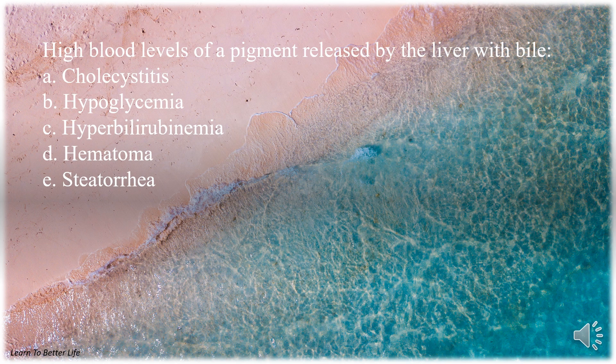High blood levels of a pigment released by the liver with bile. A. Cholecystitis. B. Hypoglycemia. C. Hyperbilirubinemia. D. Hematoma. E. Steatorrhea. The answer is C. Hyperbilirubinemia.